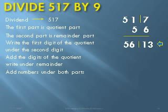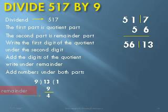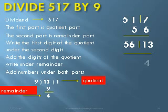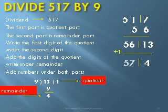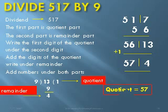13 is divided by 9: 9 ones are 9, and the remainder is 4. The quotient is 1. This remainder 4 is written as-is in the remainder part, and the quotient 1 is added to the quotient part: 56 plus 1 gives 57. Therefore, the final quotient is 57 and the remainder is 4. This ends the division process by the Nikola method.